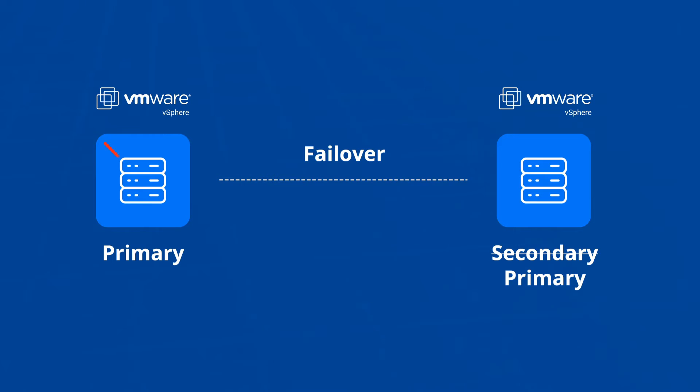And when disaster hits, just fail over to the replica and resume operations as if nothing happened. Let me show you how it works.